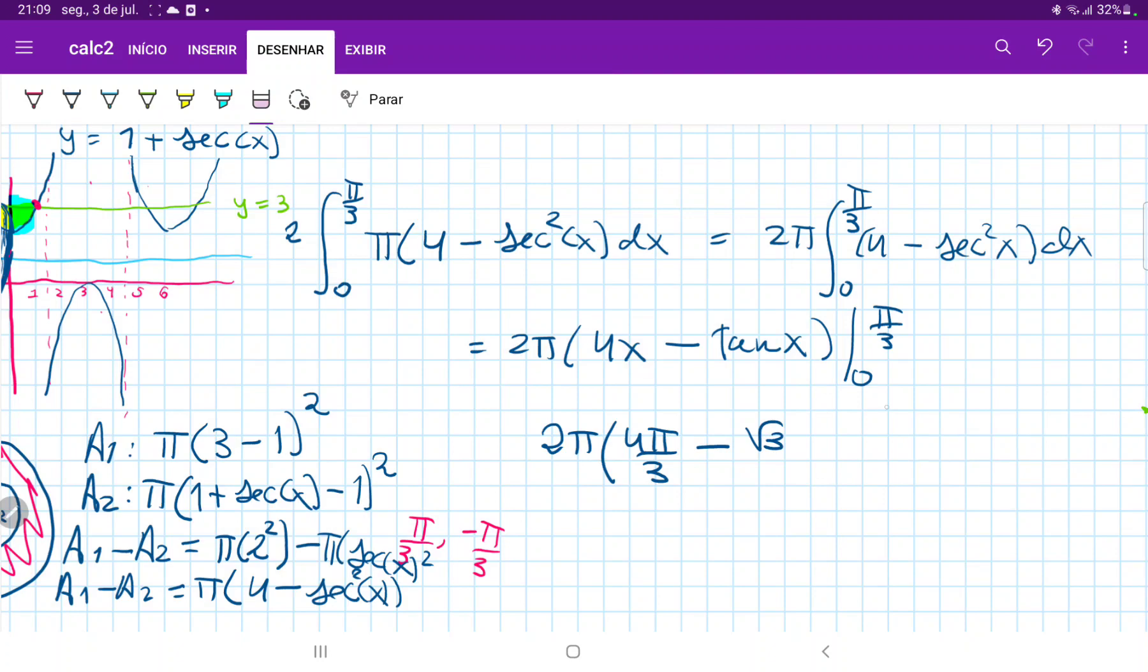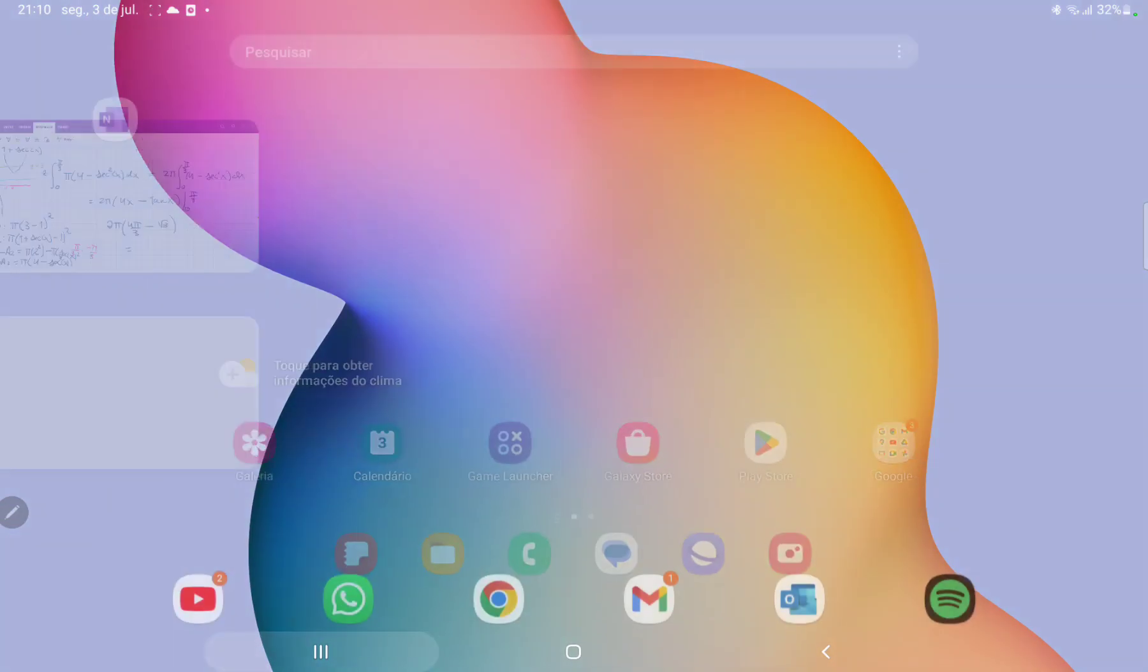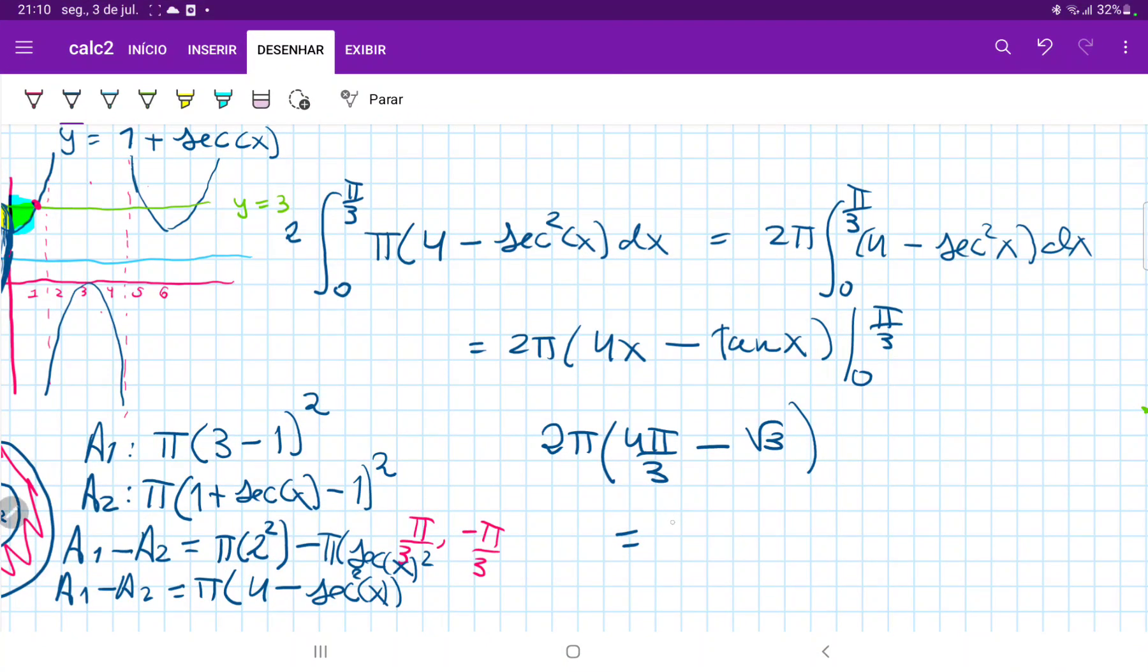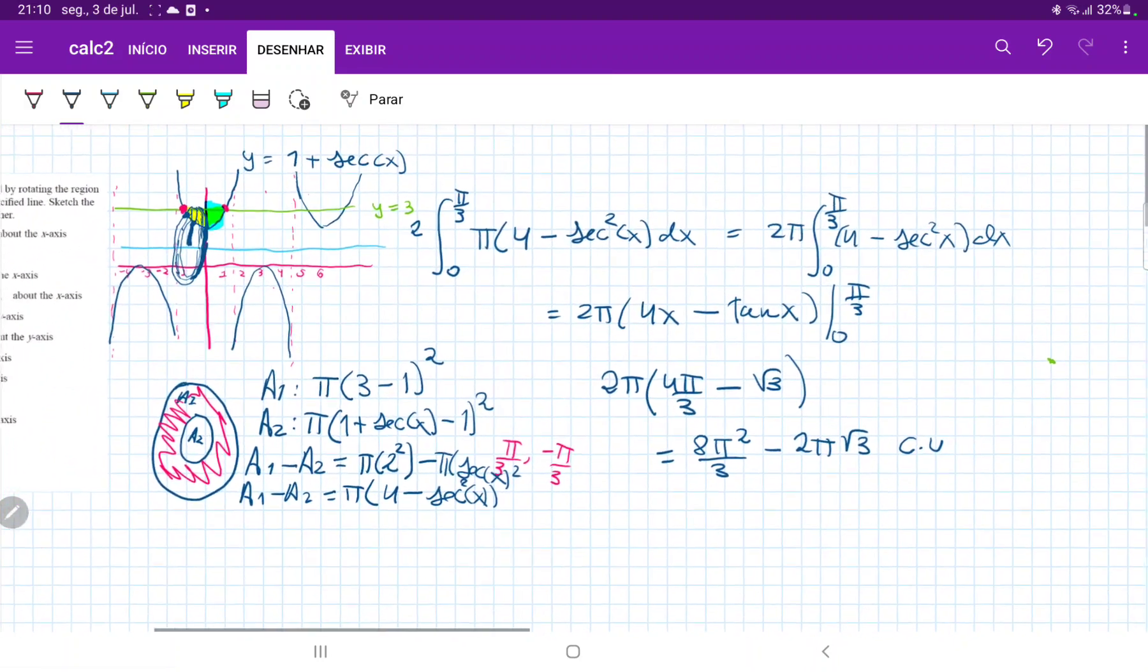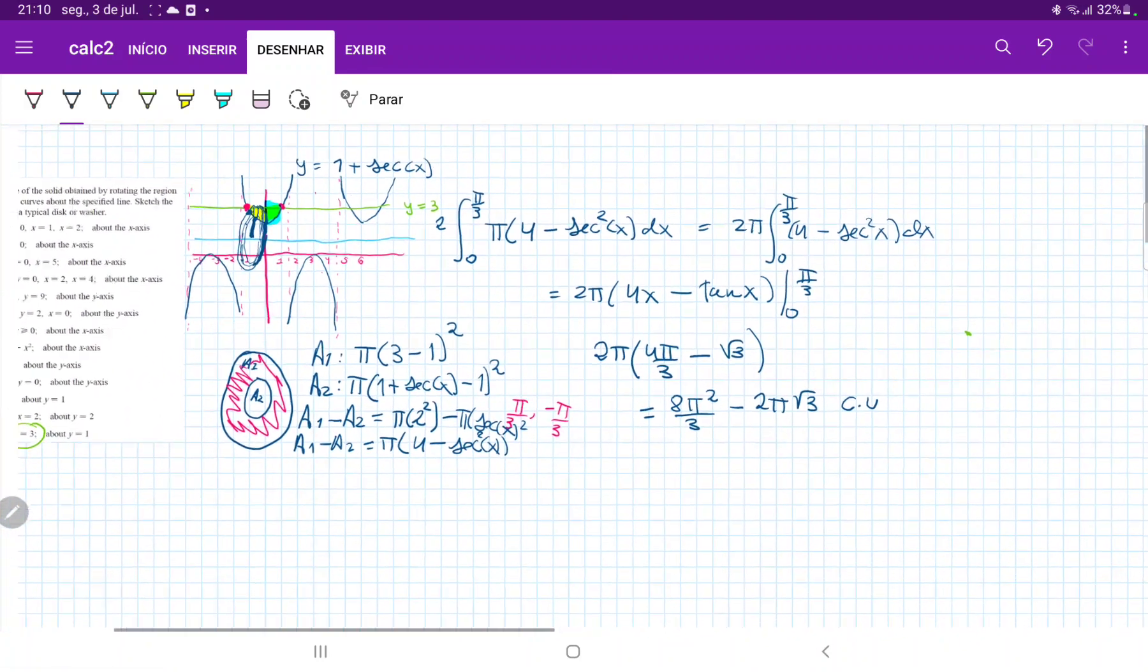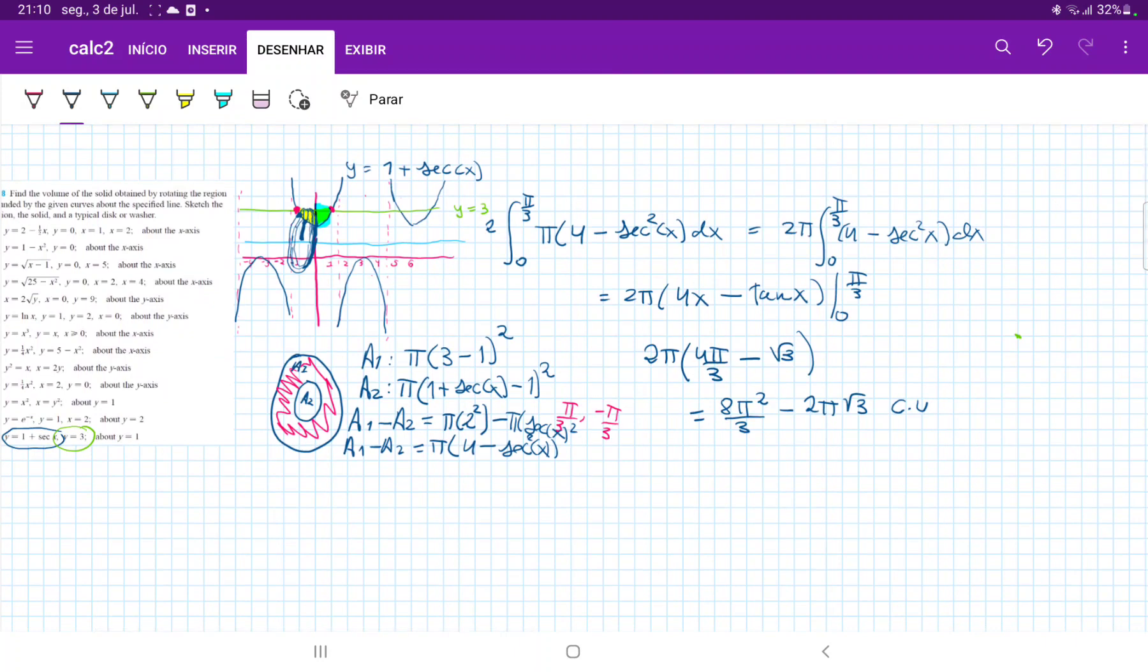And then minus the lower boundaries. But now the lower boundary is going to disappear. 4 times 0 is just 0 and tan 0 is 0. So thankfully this is a very simple calculation. And when we clean this up a little bit, this is 8 pi cubed divided by 3 minus 2 pi root 3 cubic units. And basically that is our volume when we take the area between these two curves and we revolve it around the line y is equal to 1.